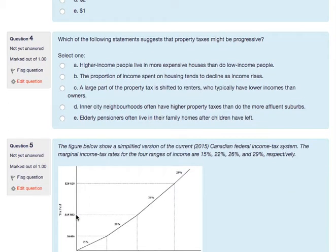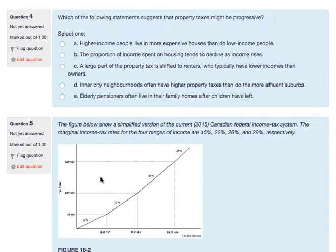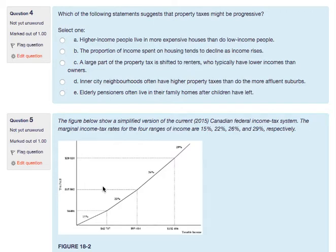Which statements suggest that property taxes might be progressive? First, remember what progressive means versus regressive. Progressive means richer people pay a higher amount of taxes — we're not treating poor people unfairly. If everyone paid the same $2,000 in property taxes, that's regressive: $2,000 on a $20,000 income is 10%, but on $2 million it's a tiny percentage. Progressive means the burden grows more the more you earn, like the income tax brackets above.